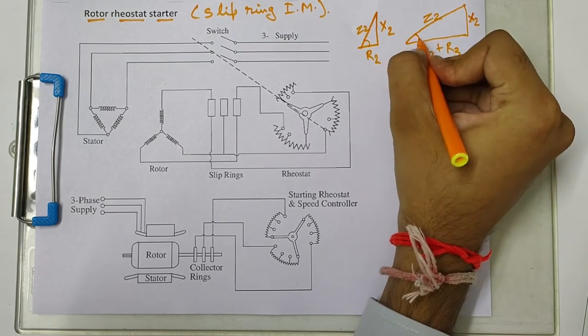In the second case if we are increasing the resistance then this will be equal to r2 plus r3. r3 is the resistance which we are adding externally and x2 is the reactance which is not going to change. This will be z2, so now we are increasing the equivalent impedance of the rotor circuit. z2 increases and what happens with the power factor angle?